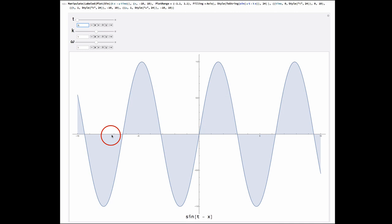Let's have a look now at how waves work using Mathematica. We've got some sliders here where we can change time, k and omega. Our wave here is a sine wave, sine of omega t minus kx. We're starting with k and omega both equal to 1, so it's just sine of t minus x.